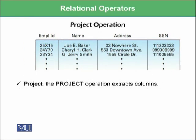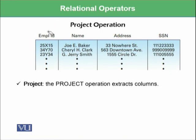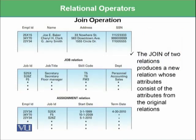There is another operator known as the project operation. This operation projects only the required columns. For example, you can say that you just need employee ID and name, and you don't need address and SSN. Or you can say you need name, address, and SSN but not employee ID. So whatever limited number of columns you want from this relation, you can perform the project operation.